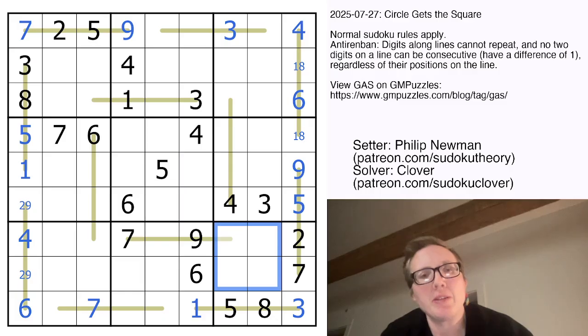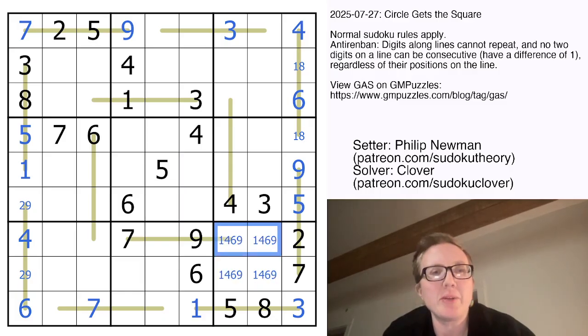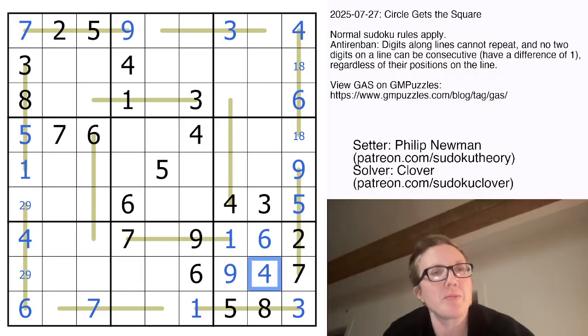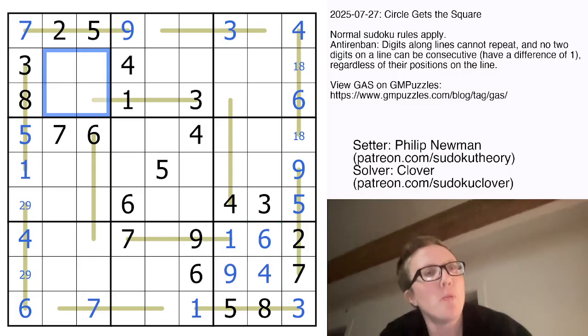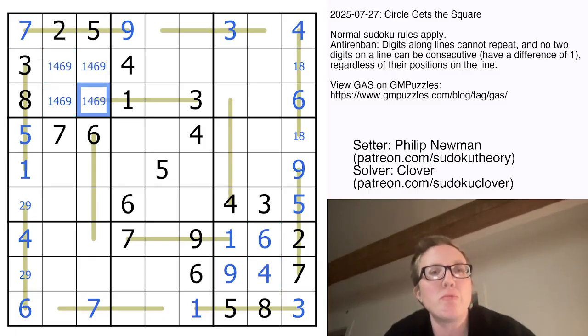Now if we look at these corner regions, we need 1, 4, 6, and 9 here. And we already have a 4 and 9 in this row. And because there's a 7 on the line, this can't be a 6. So that's a 1. So we can finish that entire corner region. We're going to do the same thing up here. We need 1, 4, 6, and 9 here. We have 1 and 6 in this row. Because there's a 3 here, this can't be a 4. So it must be a 9.